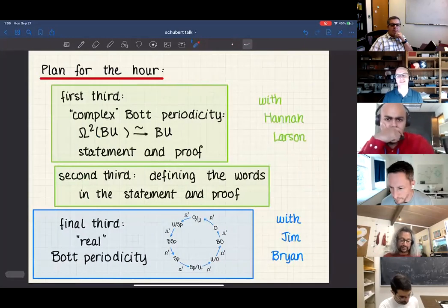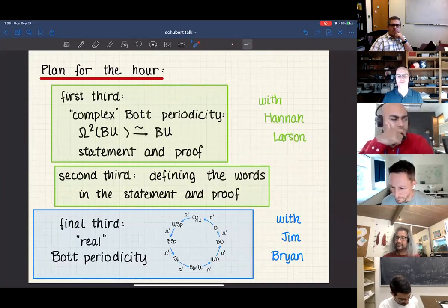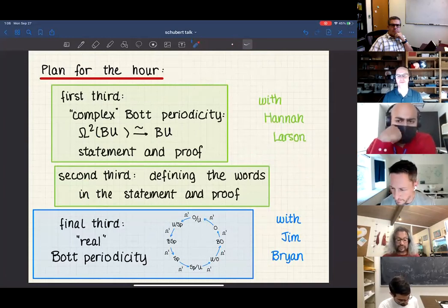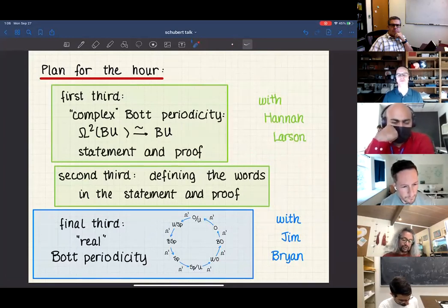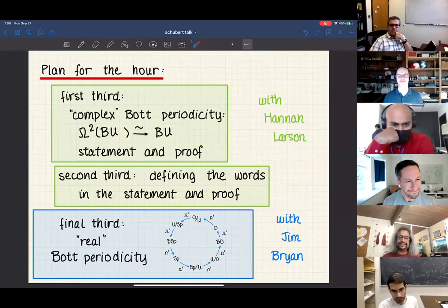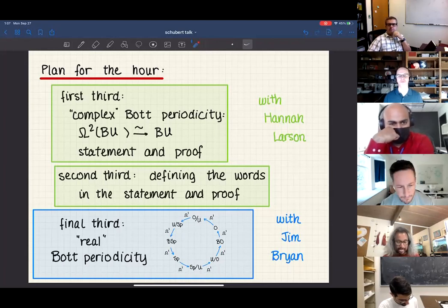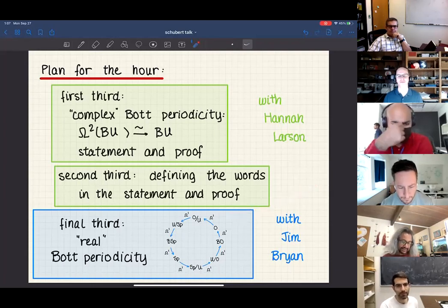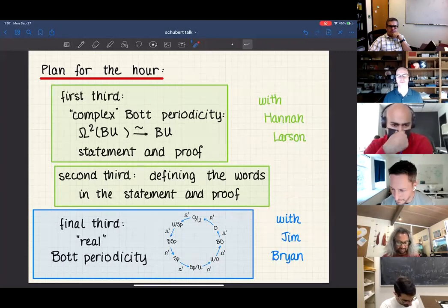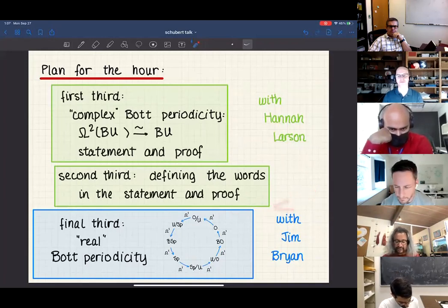My plan for this hour, and I'm hoping for the break to take place somewhere between these thirds, is to tell you first about the twofold periodicity, complex Bott periodicity, and try to convince you that once you know what the statement is, you're accidentally going to prove it. Then to make that actually true, you have to define the words in your proof. Finally, I want to really get into the richness of real Bott periodicity.